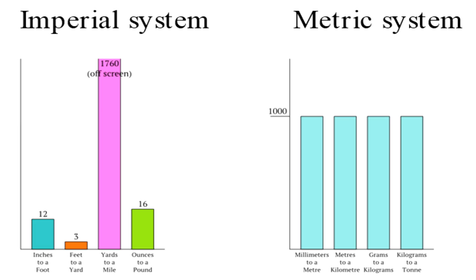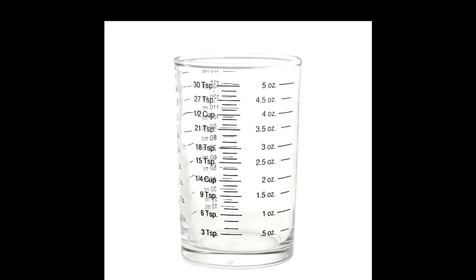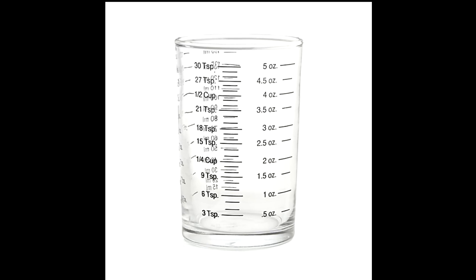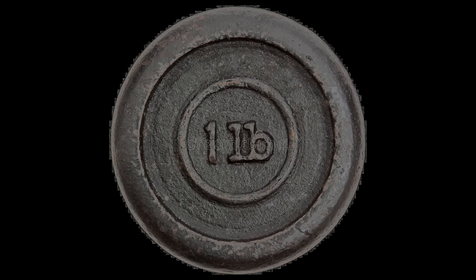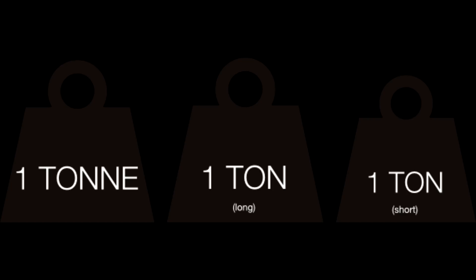If these conversions of 12, 3, 1760 aren't confusing enough, let's get a taste of the weight units. First off we have the ounce, which is 1/16th of a pound, which is 28.3 grams. Then 16 ounces is a pound, which is legally defined as exactly 0.45359237 kilograms. Then 2240 pounds is equal to 1 imperial ton.